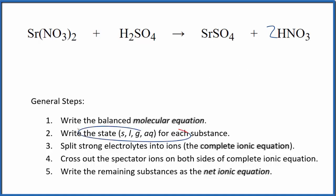Now we can write the state for each substance. If you know your solubility rules, nitrates are very soluble, so we write AQ for aqueous. It'll dissolve and dissociate into its ions. H2SO4, that's sulfuric acid, a strong acid you should remember. This will also dissociate into its ions, so we'll put aqueous. Then strontium sulfate—sulfates are often soluble, but there are a few exceptions.